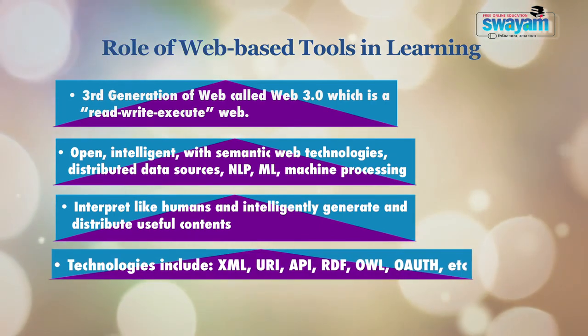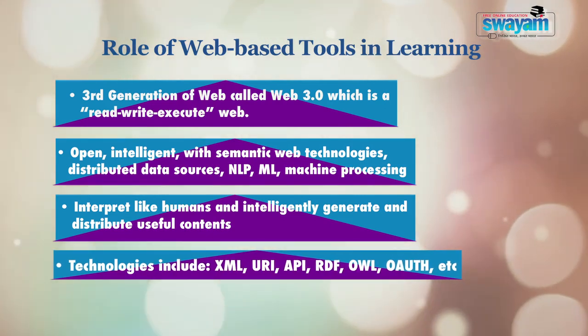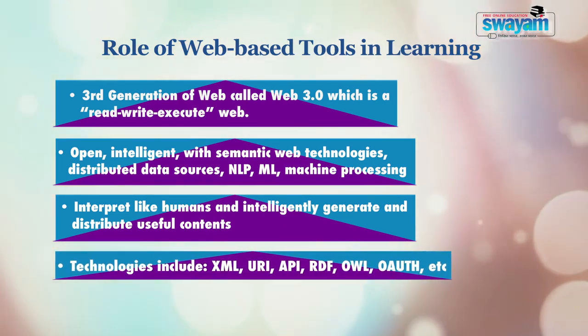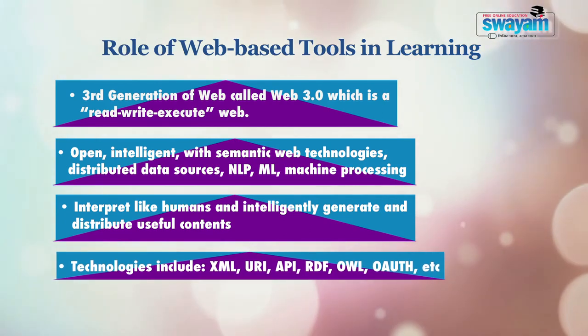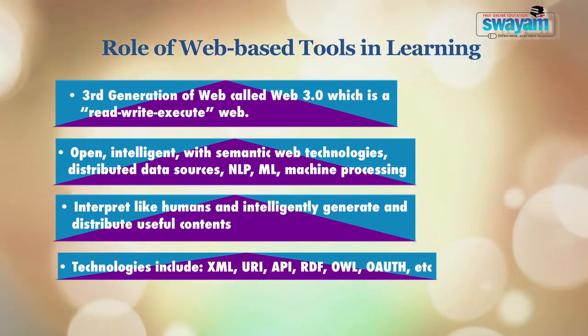Technologies of Web 3.0 include XML, URI, API, RDF, OWL, and others. This technology evolved into Web 4.0 or Web 5.0, also known as the intelligent web or symbiotic web, expected beyond 2020. It will be the next generation of the web — an intelligent web providing self-learning and self-organizing capabilities, connecting all devices in the real and virtual world in real time.